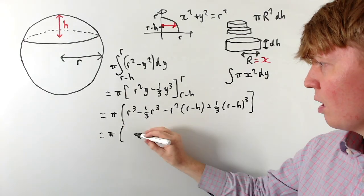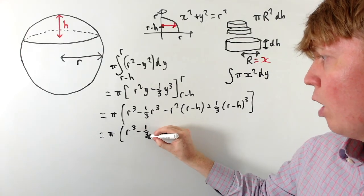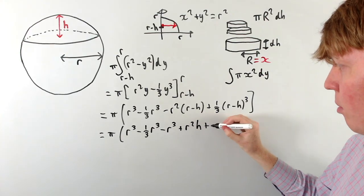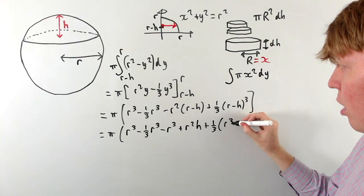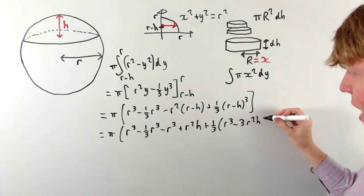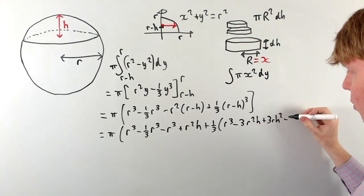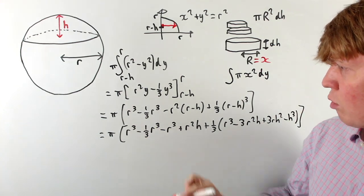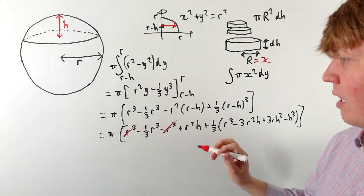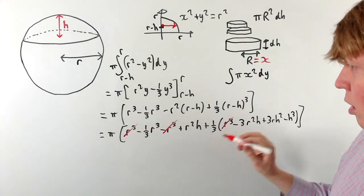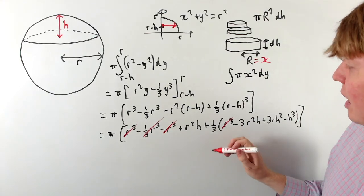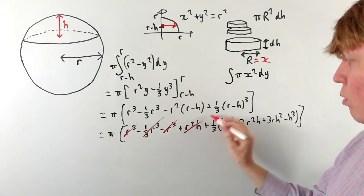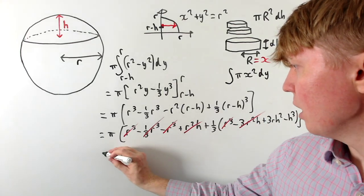Expanding the brackets reveals a lot of nice cancellation. We get r³ − (1/3)r³ − r³ + r²h, plus (1/3) times the expansion of (r − h)³, which is r³ − 3r²h + 3rh² − h³. Reading off the cancellations: r³ and −r³ cancel, +(1/3)r³ and −(1/3)r³ cancel, and r²h and −3r²h·(1/3) cancel as well.